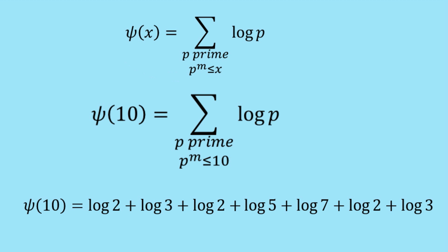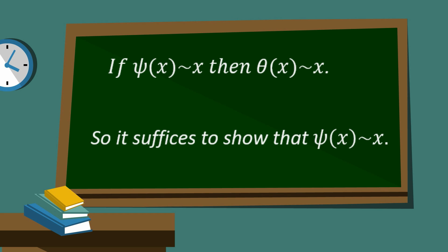Okay, so the second step of the proof is that it was proven that if psi of x is asymptotically equivalent to x, then theta(x) is asymptotically equivalent to x. So now it will just suffice to show that psi of x is asymptotically equivalent to x.